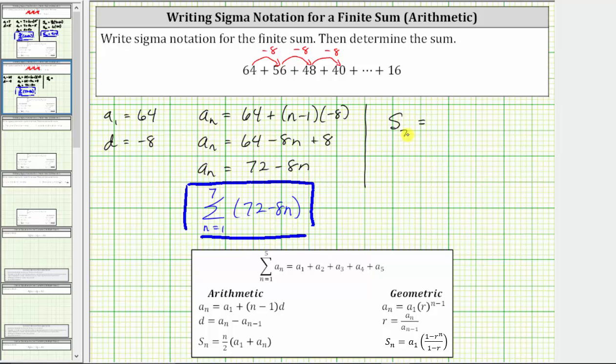As soon as we write S sub 7, we know n is equal to 7. So S sub 7 is equal to n divided by 2 is 7 divided by 2 times the quantity a sub 1 plus a sub n is a sub 1 plus a sub 7, which is the sum of the first term and the last term, which in our case is 64 plus 16.